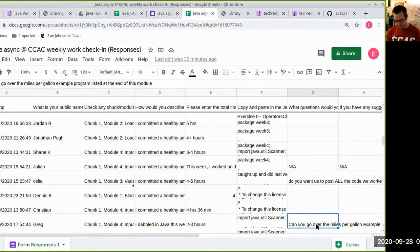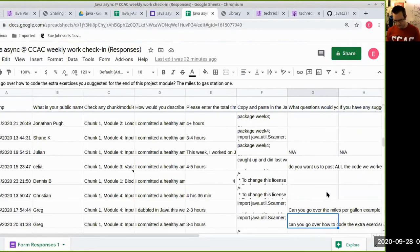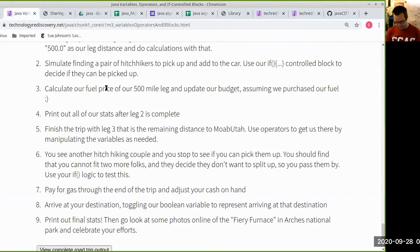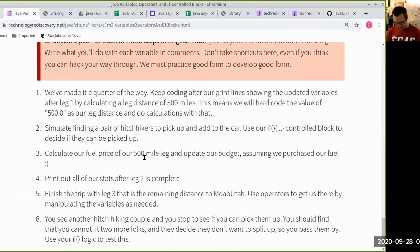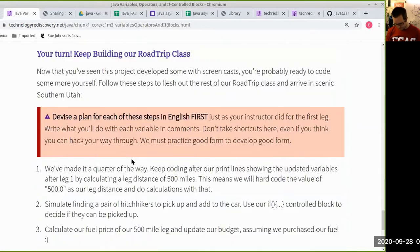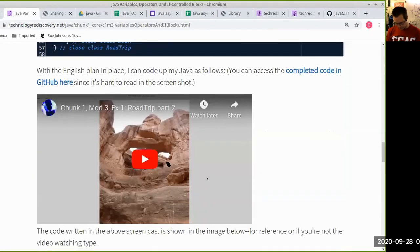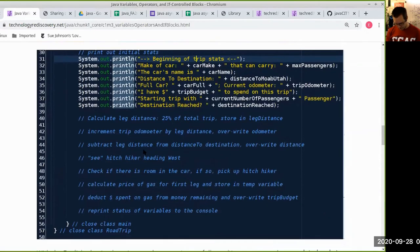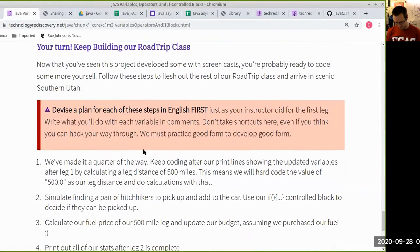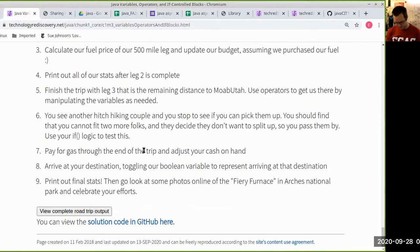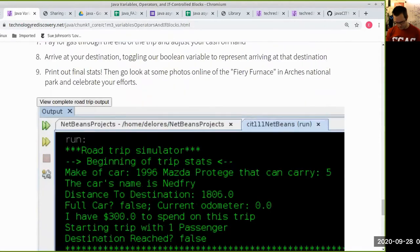Can you go over the mileage per gallon program listed at the end of this module? And can you go over how to code the extra exercise you suggested at the end of this gas station one? So the more specific you can get in your questions, the more likely it is that I'll be able to answer it mostly.